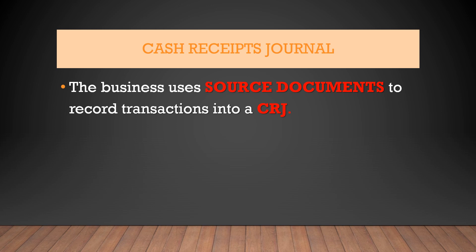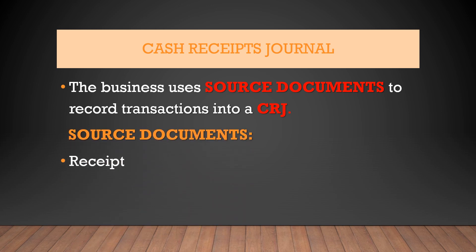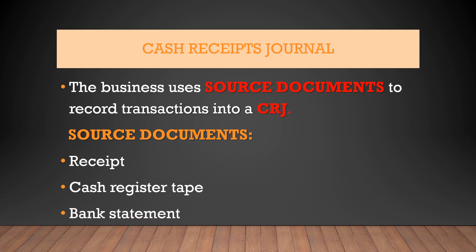The business uses source documents to record transactions into a CRJ. They don't just use all source documents — they need to be specific about which ones to use. The source documents used to record entries into the cash receipts journal are: a receipt, which indicates that the business has received money; the cash register tape, used to collect cash from clients; and the bank statement, because money could have been deposited directly into the bank.